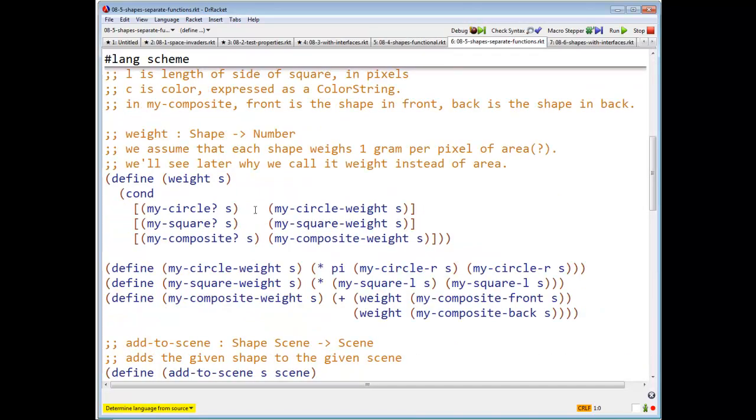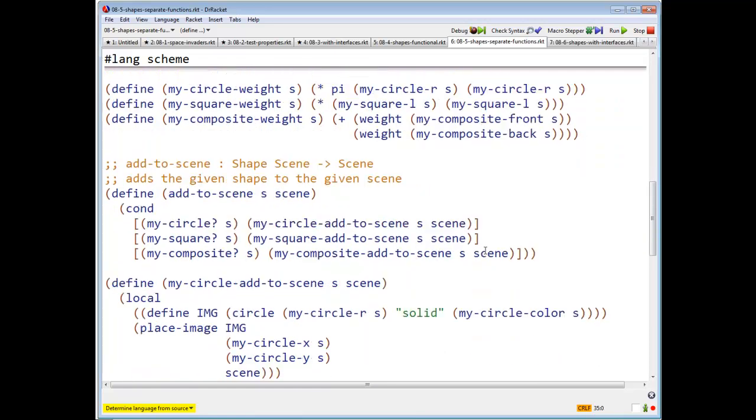Here, my circle of s is going to be my circle weight of s. If it's a square, it's going to be my circle weight of s. Excuse me, my square weight of s. If it's going to be my composite, it's going to be my composite weight of s.